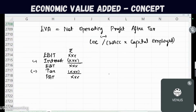Usually, Profit After Tax is determined in this format. But to find Economic Value Added, we have to ascertain Net Operating Profit After Tax. So what is the difference between Profit After Tax and Net Operating Profit After Tax?